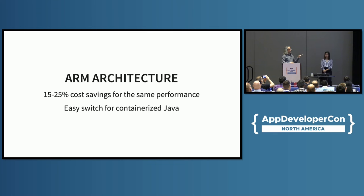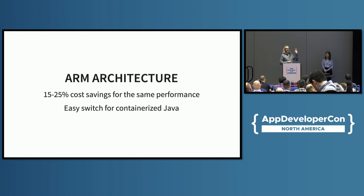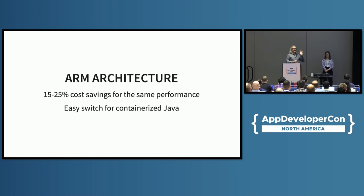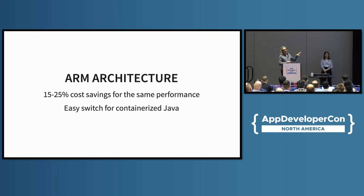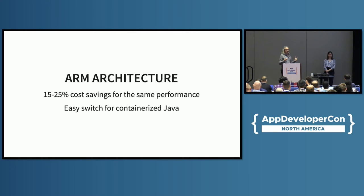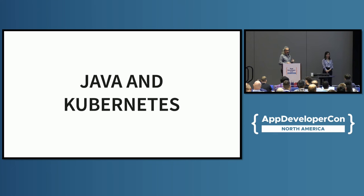Another thing we're using for scaling and cost savings is switching to ARM. For our numbers, we're getting 15 to 25% cost savings for the same performance. In Java it's very easy because you have JVMs built for ARM — you just change the base image for your containers and that's all.